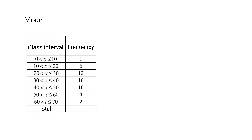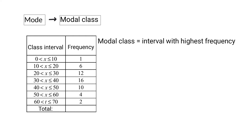The next measurement we are going to have a look at is the mode. For grouped data we cannot specify the exact value that occurred the most, and that is why for grouped data we will be looking for the modal class interval. Just like the mode is the data value with the highest frequency, the modal class will be the class interval with the highest frequency — and in our case the modal class will be the class interval from 30 to 40.